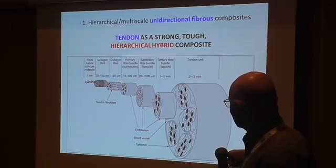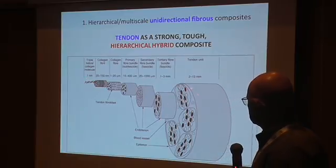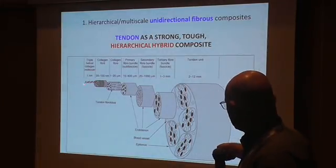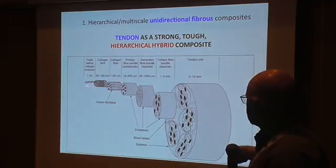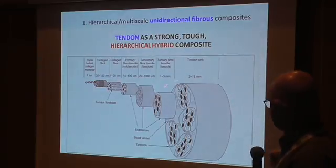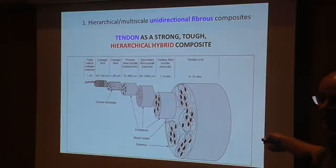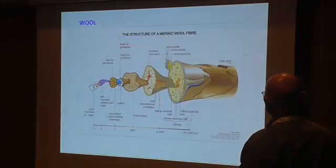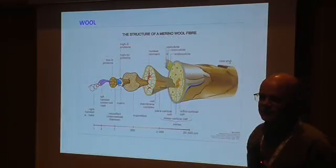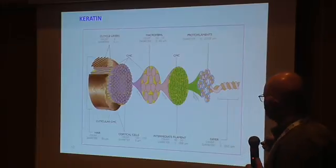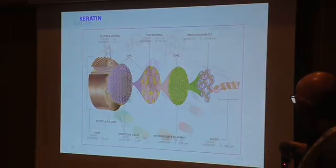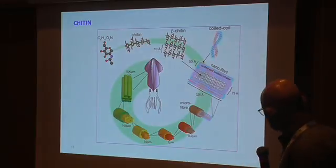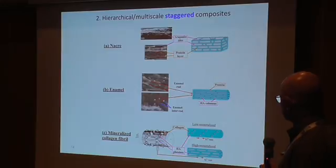At every level you slightly weaken the fiber — so here is the strongest part and here is the weakest part — giving you a composite at many scales. Wool is exactly the same principle operating at many levels. Keratin is the same, and chitin is the same, where the same arrangement arises.